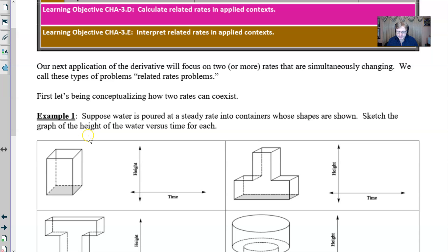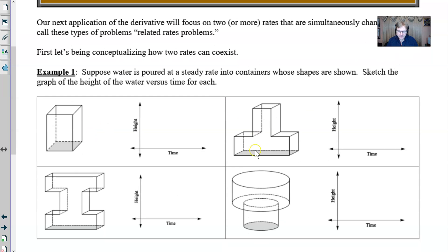So for our first example which is just a series of four different vessels with four different graphs we're going to say that water is going to be poured into these vessels at a very steady rate and the shapes of these vessels or containers are very unusual. I want us to sketch the graph of the height of the water versus the time that it takes to fill.